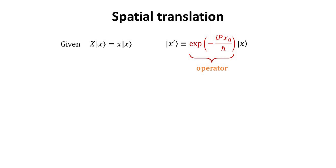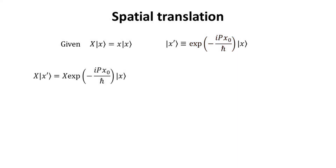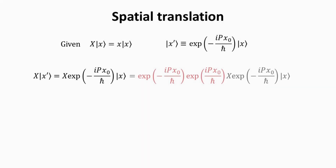Here, x_0 is just a real number. We call this new state vector |x'⟩. Now, is |x'⟩ still an eigenstate of the position operator? We shall find out. Let's operate |x'⟩ with the position operator as shown. I can multiply on the left by the exponential operator and its inverse, since their product is just the identity.